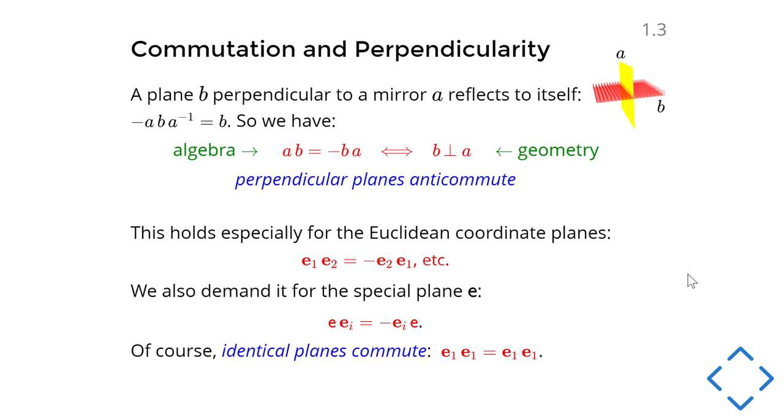Immediately we see that the algebra encodes for some geometrical relationships. So if I take a plane that is perpendicular to a plane A, so the geometry is B is perpendicular to A, then by this reflection operator we see that this is a plane that if I reflect it in plane A, it stays itself. So we should have this equation, and if I multiply on the right by A, then that means AB equals minus BA. So the algebraic anti-commutation relationship between two planes reflects their geometric orthogonality. And this happens again and again.